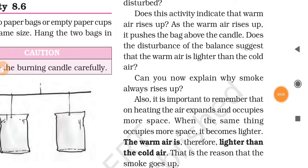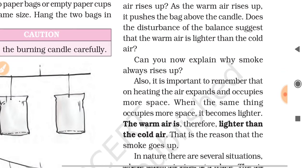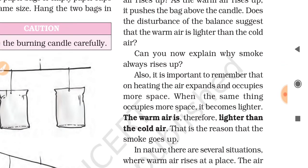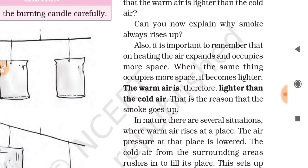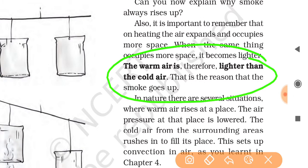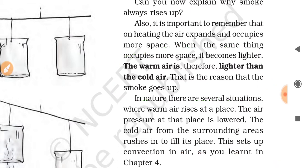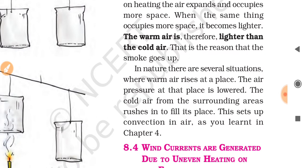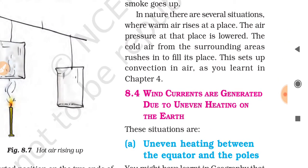Does the disturbance of the balance suggest that the warm air is lighter than the cold air? Can you now explain why smoke always rises up? On heating, air expands and occupies more space. When the same amount of air occupies more space, it becomes lighter. The conclusion of this activity is that warm air is lighter than cold air, and that is why smoke rises up.